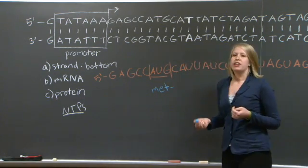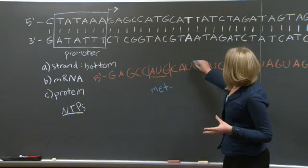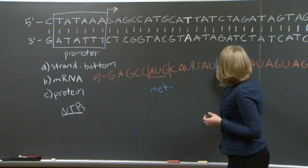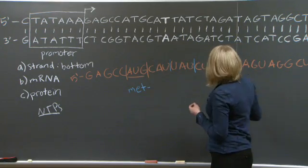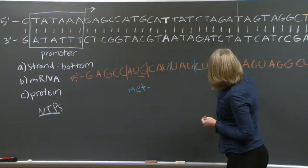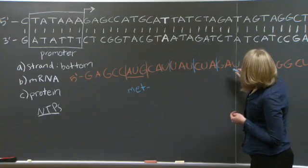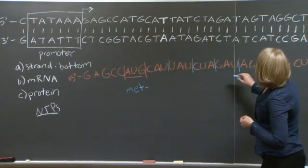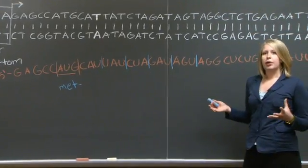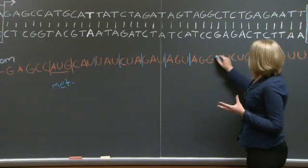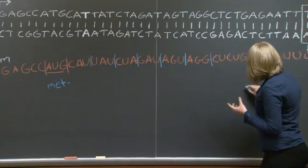We're then going to read in three base pair codons down from the five prime end of our template to the three prime end of our template. And so we're going to keep going in this translation until we reach what's called a stop codon. Now, there are three stop codons.